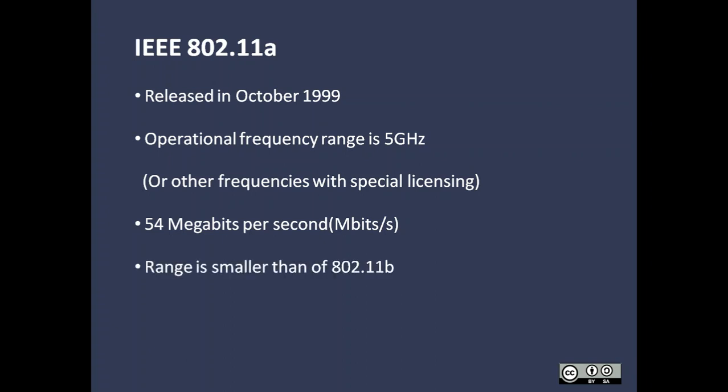The range of 802.11 A is smaller than 802.11 B because it operates on 5 GHz, and higher frequencies are absorbed more by various objects. Approximately, the range is about one-third of 802.11 B. It is a very old and outdated standard. Some legacy devices need 802.11 A connectivity for specific uses. It has a speed of 54 Mbps.